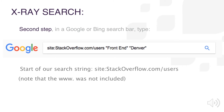The first step is to decide which site you'd like to search. Let's say Stack Overflow. We want to find the user profiles of people who match our search. To do that, we include 'users' in our search string — for example: site:stackoverflow.com/users